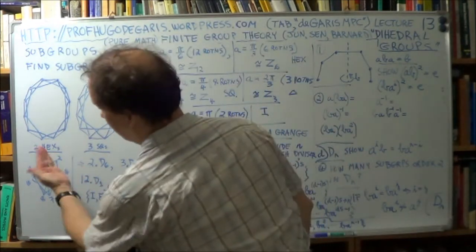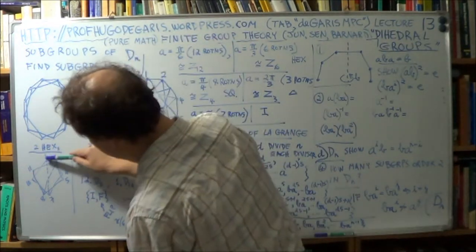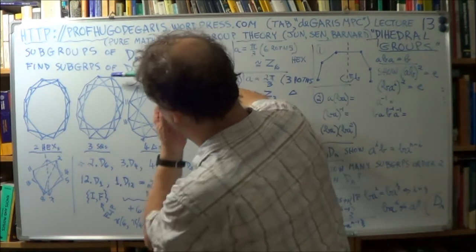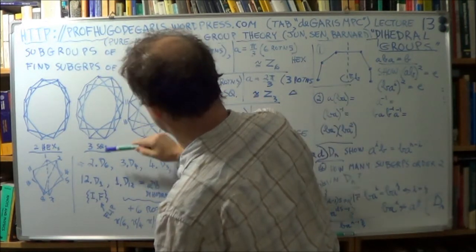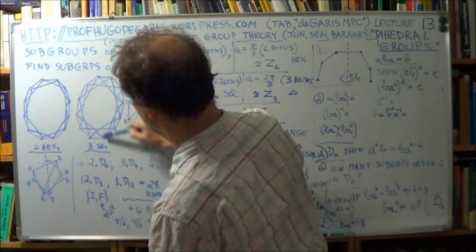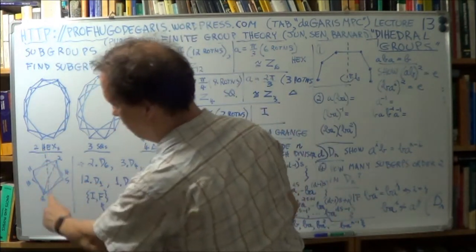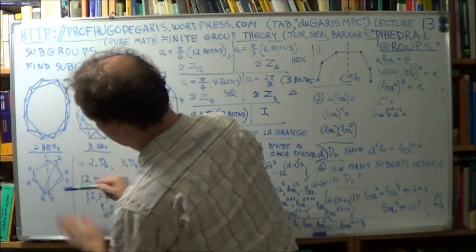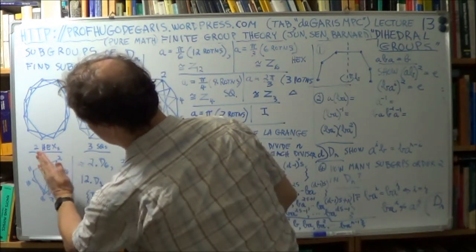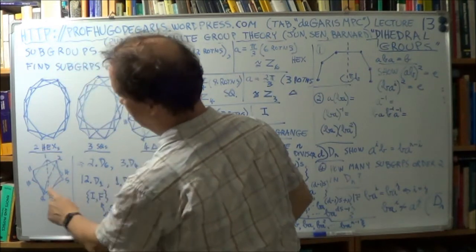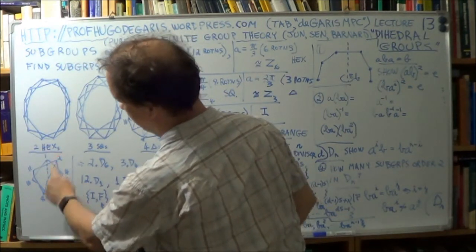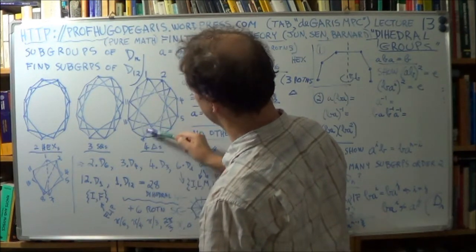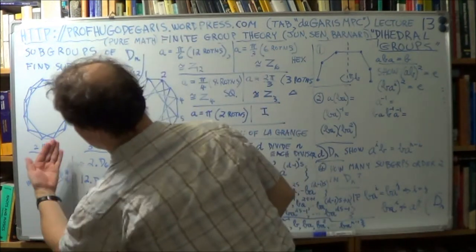Now, if I perform a flip-type operation, about this axis, one, seven. That will move my points differently from if I flipped around the axis, two, eight. Two, eight.